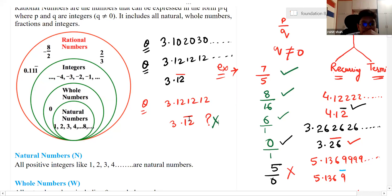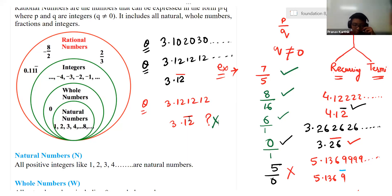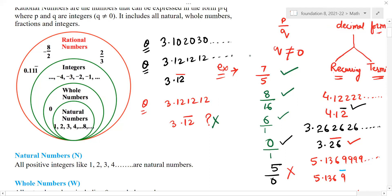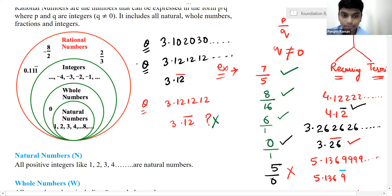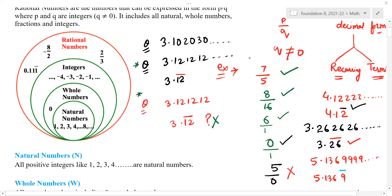Yes, sir. How do we find if it's finite or infinite? If there is a dot, dot, dot — that means it is a continuous process. In the question with dots, the same sequence and logic will be applied infinitely. Any doubt? No, sir.